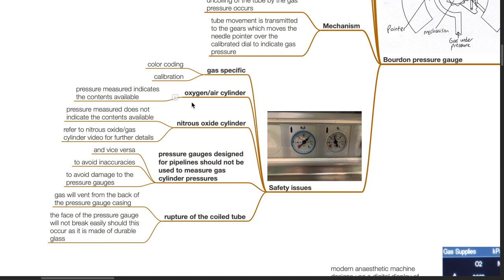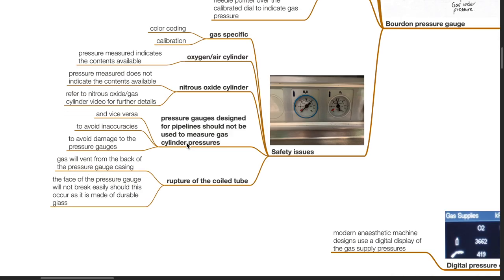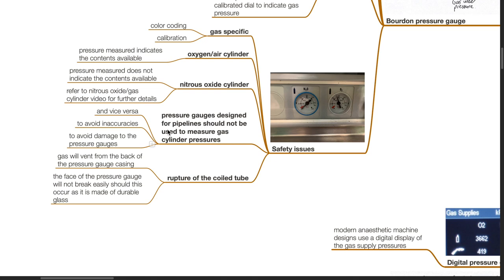For an oxygen or air cylinder, the pressure measured indicates the contents available in the gas cylinder. For a nitrous oxide cylinder, the pressure measured does not indicate the contents available. Refer to the nitrous oxide and gas cylinder video for further details. Pressure gauges designed for pipelines should not be used to measure gas cylinder pressures and vice versa, to avoid inaccuracies and to avoid damage to the pressure gauges.